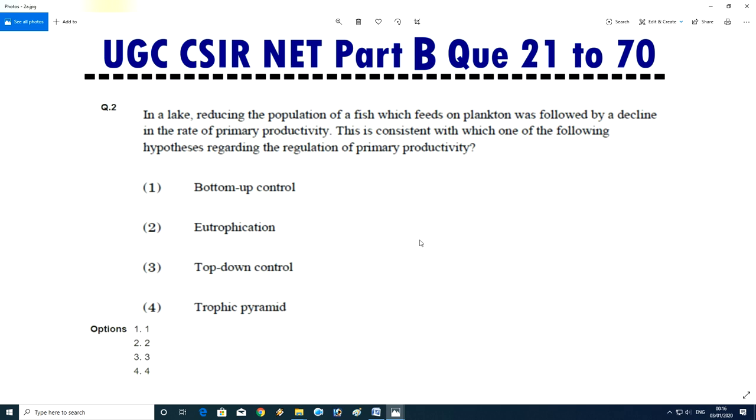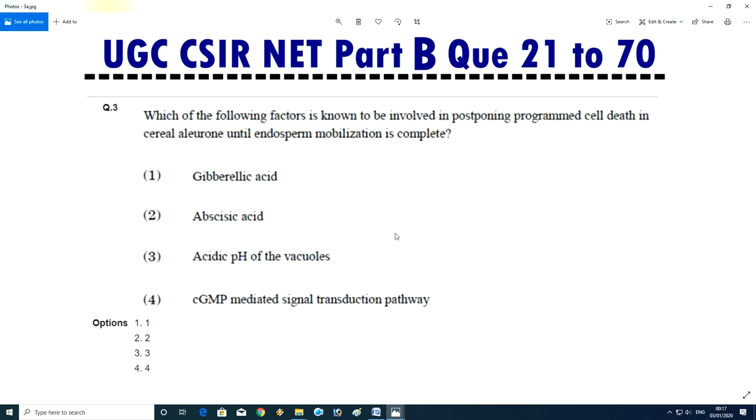Question No.2 - In a lake, reducing population of a fish which feeds on plankton was followed by decline in the rate of primary productivity. This is consistent with which of the following hypothesis: bottom-up control, eutrophication, top-down control, or trophic pyramid? Answer is 3, top-down control.